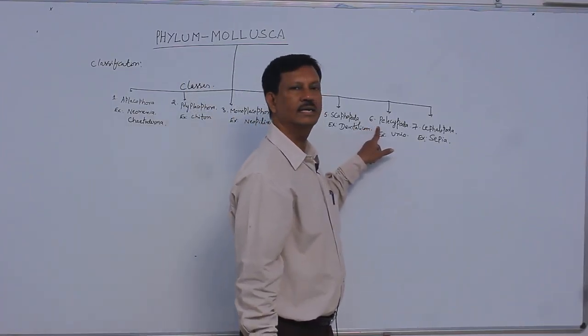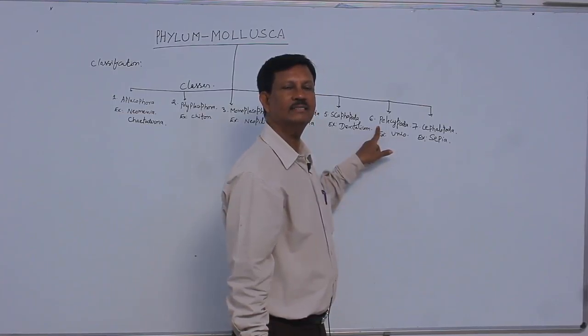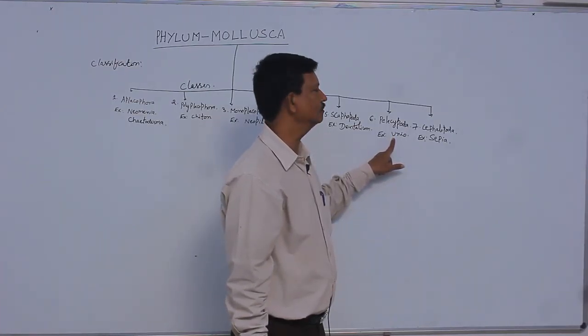Pediciphora. In Pediciphora, there are two valves present. Hence, they are known as Bivalvia. Example is Unio or Freshwater Mussel.